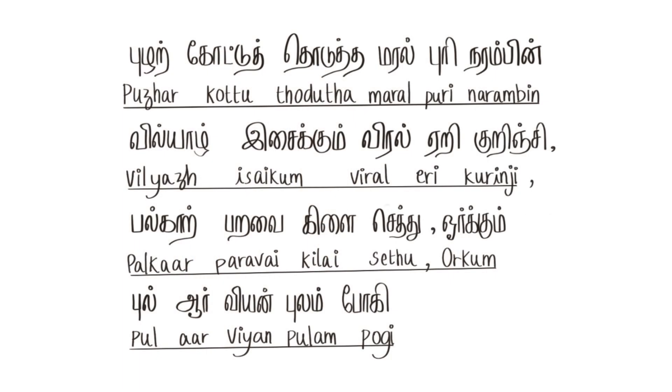This is an extract from Penumpanatra Padai: 'pullar kotu todutta maralpodi narambin vilyar isaikum virali eri kurunji palgar paravai kilai setu orkum pullar viram puram poogi.' This extract talks about the origin of the first yal.